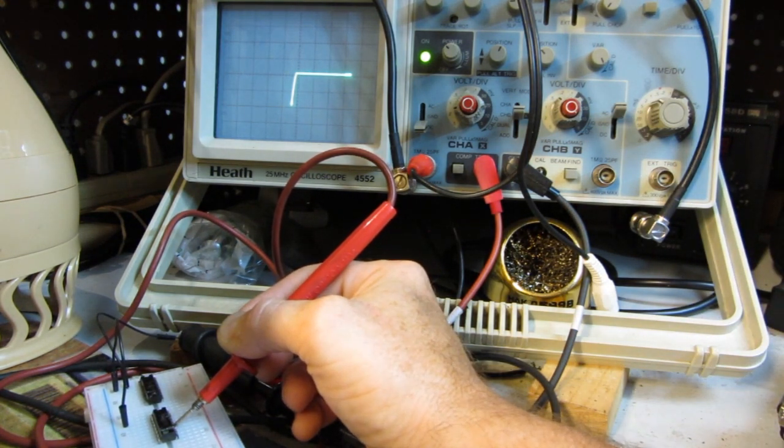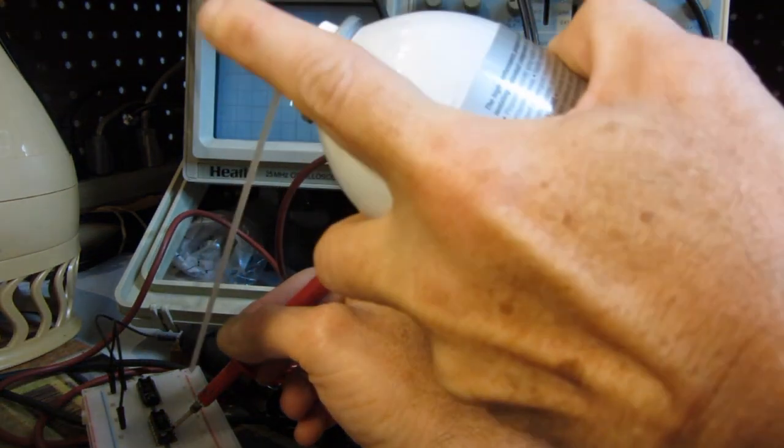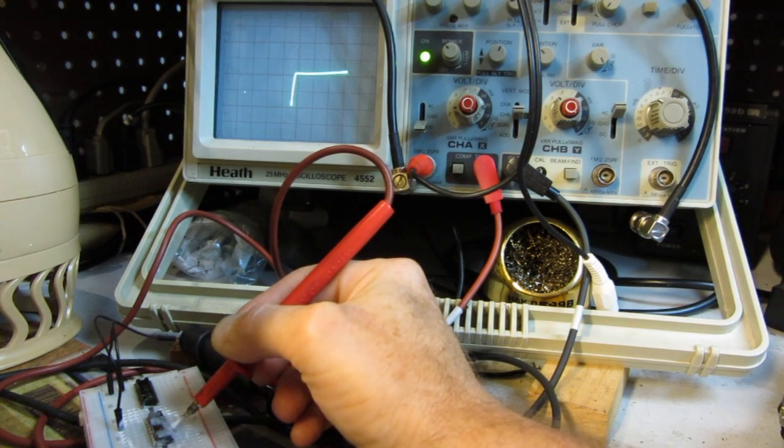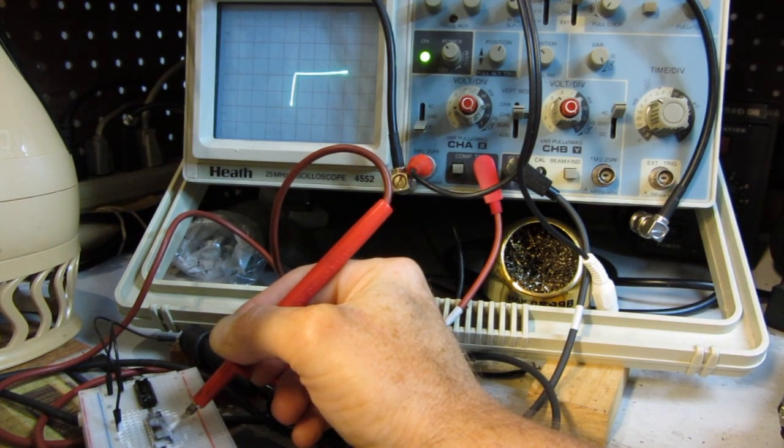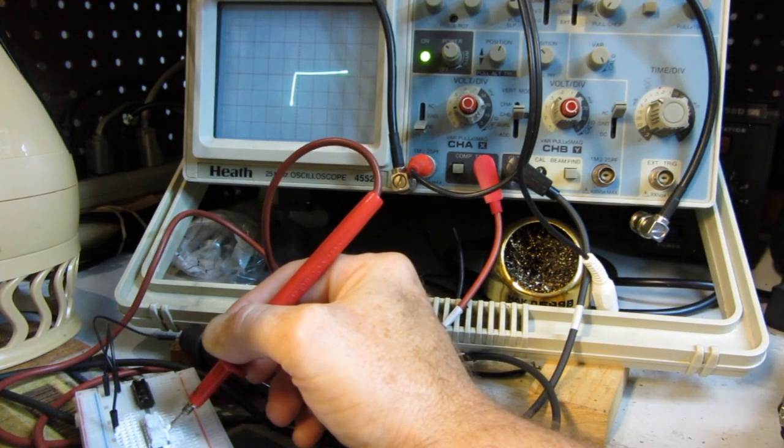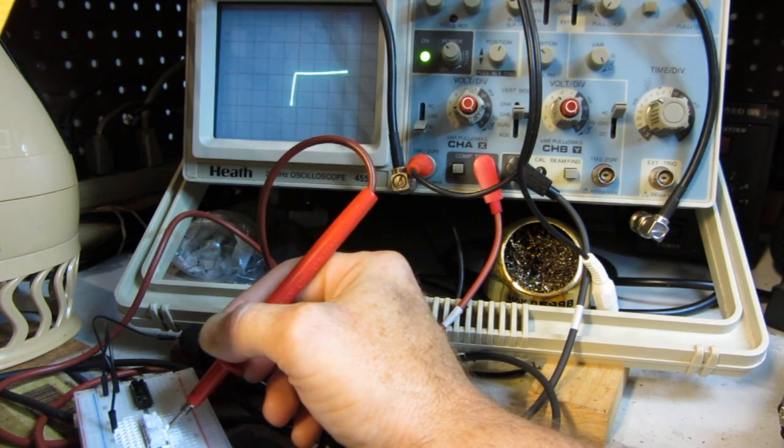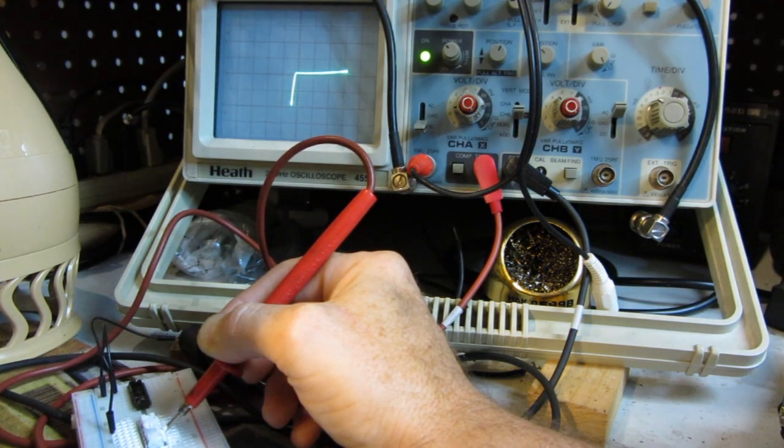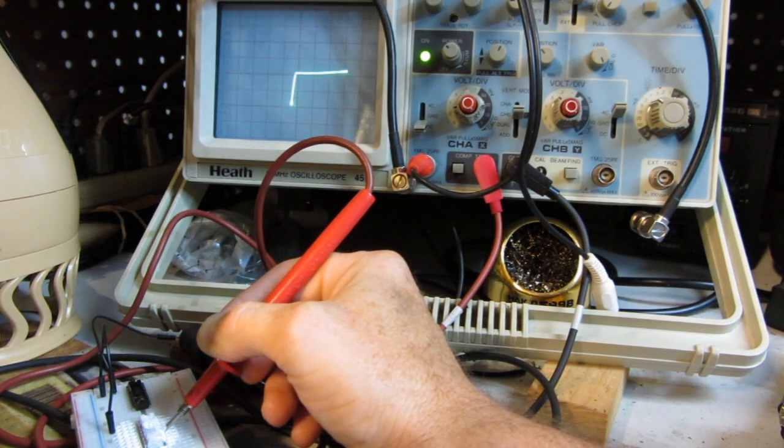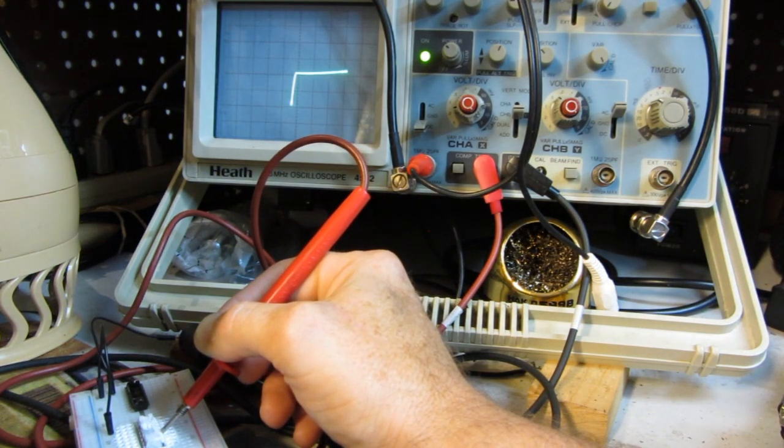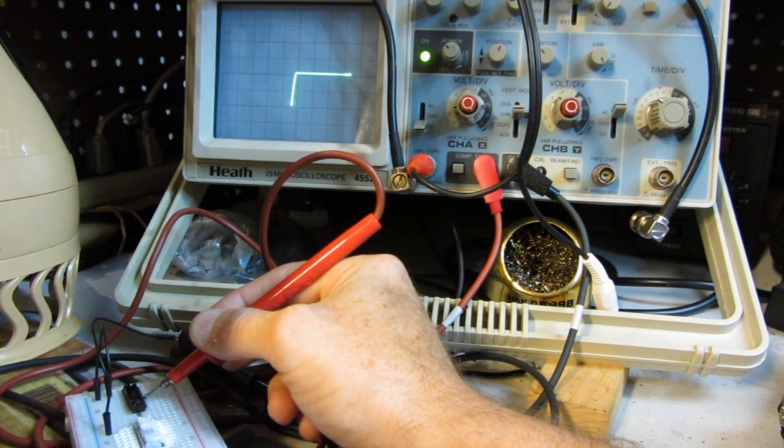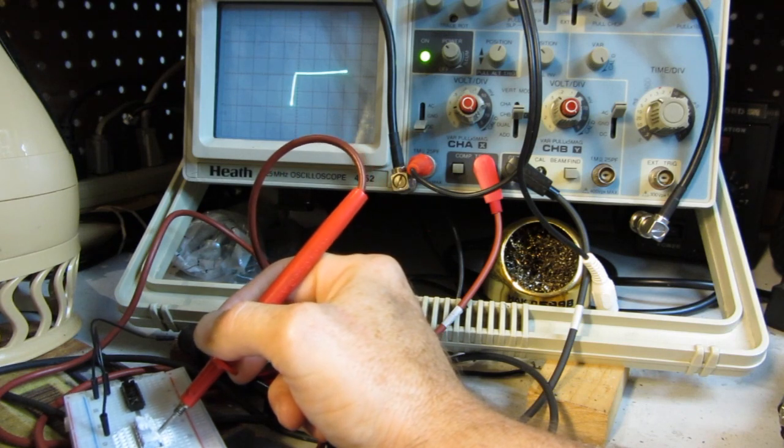When I hit it with freeze spray, there it is. You can start seeing the slant. It's not as pronounced as when it was in circuit, but I think what it is, this was a little bit erratic, even when it was in the machine, where every now and then it would work for a little while, but usually it wouldn't. And I think this is what you're getting right here.